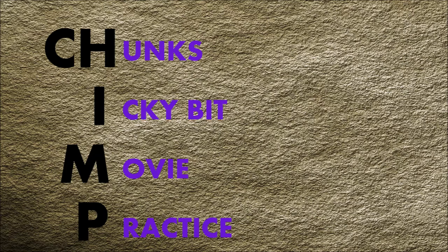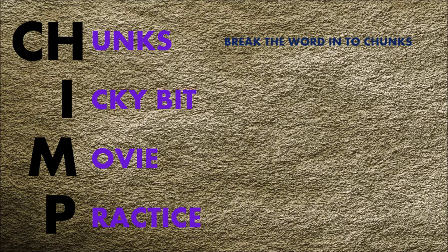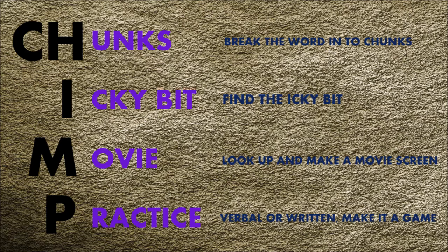The CH stands for chunks, the I for the icky bit, M for a movie screen, and P for practice. Chunks means we break the word into chunks. The icky bit is where we find the part of the word that always tricks you — we can always get some of the spelling right, but there's some bit that makes it really difficult. The movie is where we look up to a blank spot on the wall or ceiling and imagine a movie screen. Surprisingly, practice means practice the spelling of the word. It can be verbal or written, and try to make a game of it.